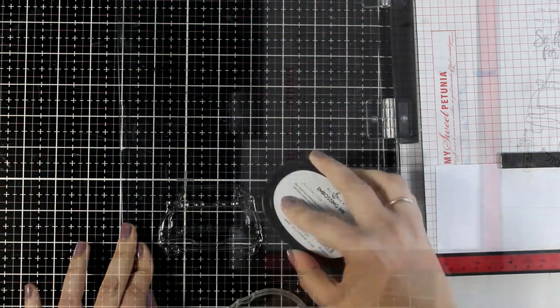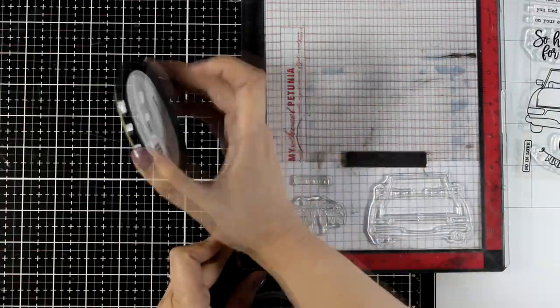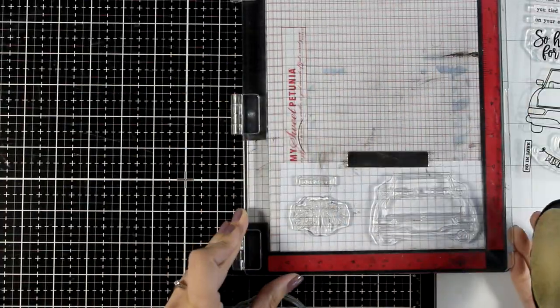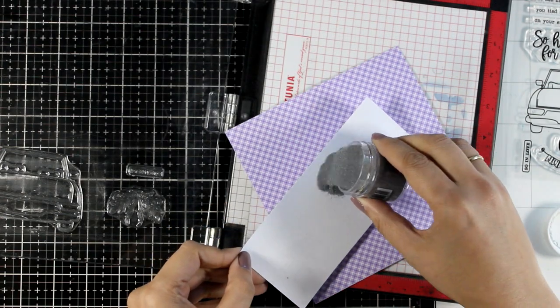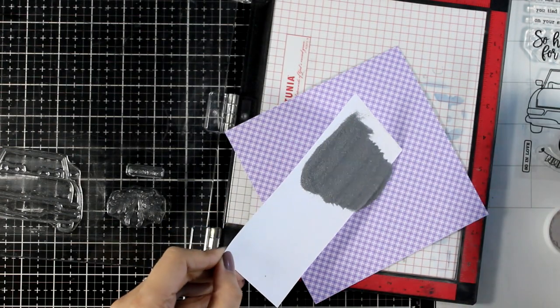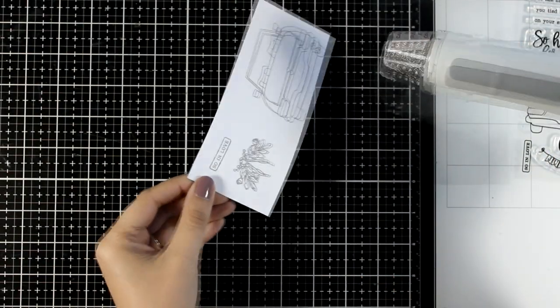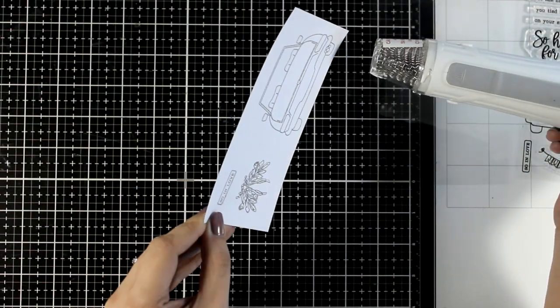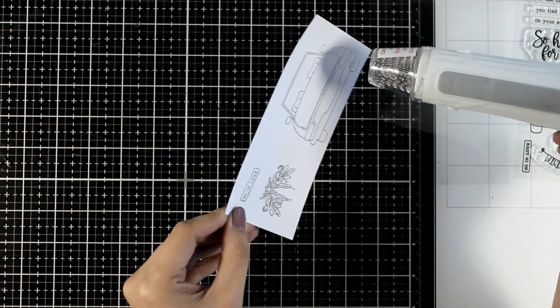So for today I am going for a very elegant looking card so I am keeping all the colors into being silver and white and that's why I am going to stamp with embossing ink and then apply on top silver embossing powder. I am melting the embossing powder with my heat tool.